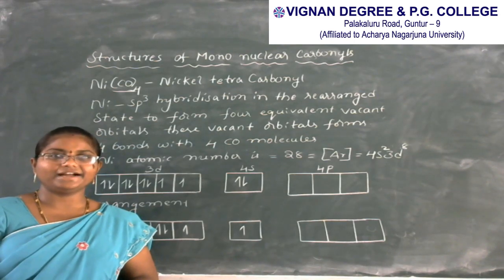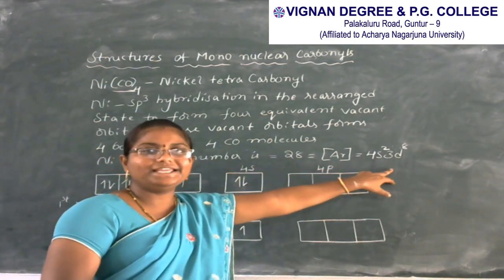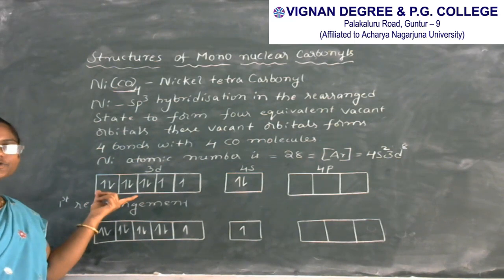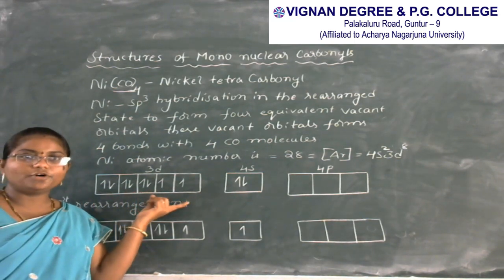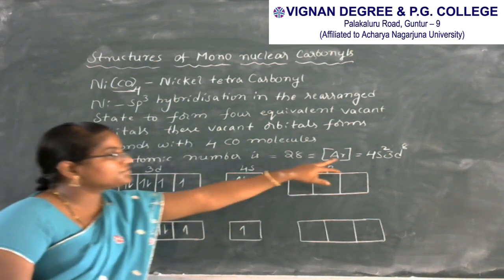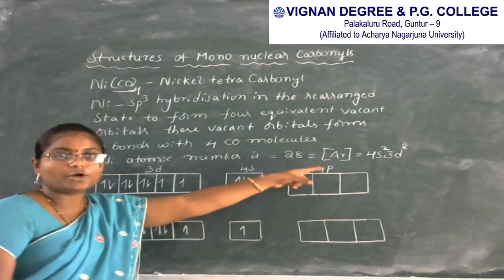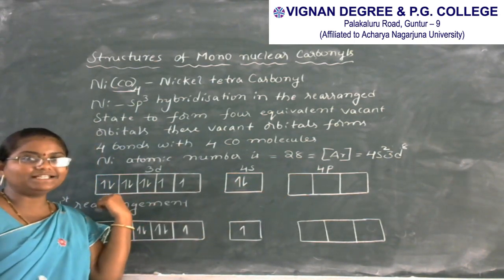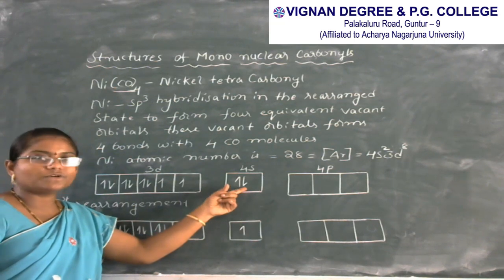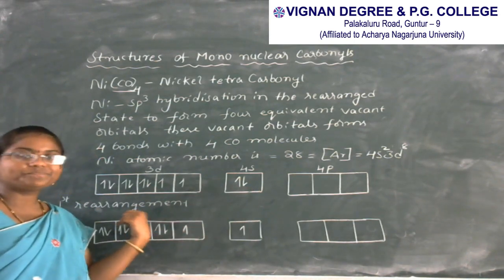Nickel has atomic number 28 and ground state electronic configuration 4S2 3D8. In ground state, the filling of electrons shows 2 electrons in 4S and 8 electrons in 3D, with further orbital 4P. In the rearranged state, one electron from 4S is rearranged to its 3D orbital in the first rearrangement.